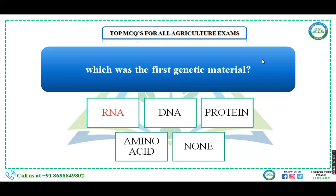In most living organisms, DNA acts as the genetic material — meaning the material which transfers genetic characters from one generation to the next. There are two key terms: inheritance, where a character is transferred from one generation to another through genetic material, and variation, where no two organisms of the same species look identical. The study of inheritance and variation is known as genetics.